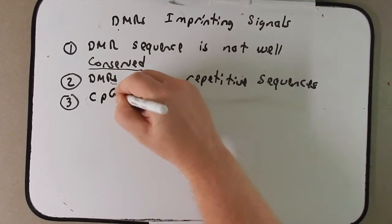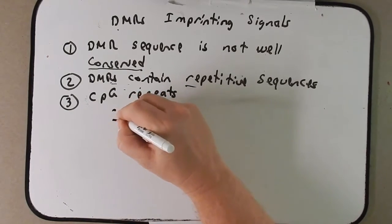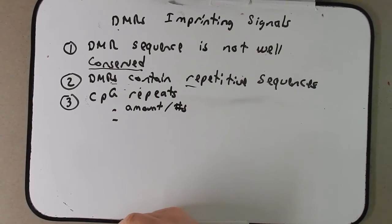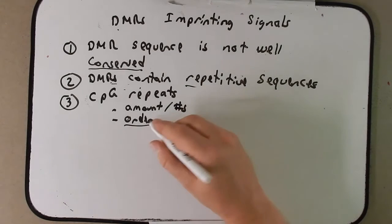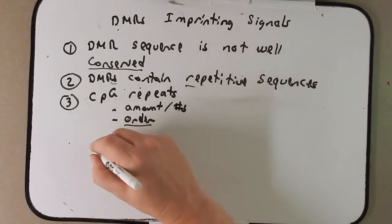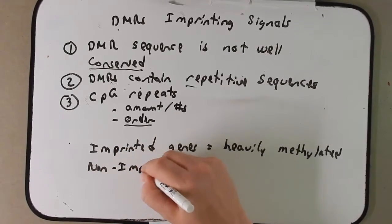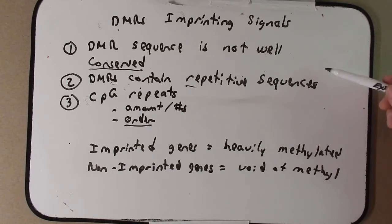The next thing could be the CpG repeats that we've talked about before. Now there's nothing unique about these CpG repeats, but there are some who believe that maybe the amount or the numbers of CpG repeats could help identify imprinted genes. Maybe it's the order of them. Maybe that has something to do with it. What that code is, we don't know. But it is a hypothesis. All we know for sure is that imprinted genes are heavily methylated. So we know that, and non-imprinted genes are void of methyl groups. But we don't really know how or what that signal is that says to imprint certain genes.